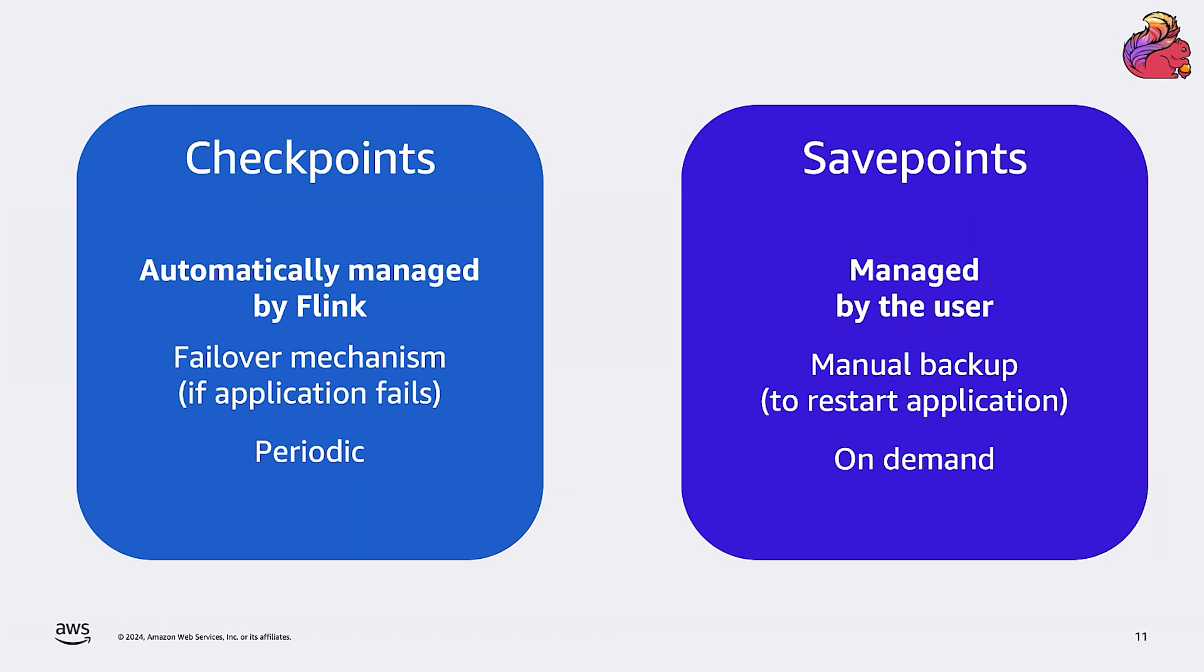Savepoints are a backup mechanism that Flink can use to restart the application from an older known position and state. Or simply, you can use this to save the state when you're stopping the application and then restore it when you restart the application later, so you can restart exactly from the point where you stopped. Users often schedule periodic savepoints every hour, every day, or whatever, similarly to what they do with periodic database backups. And this is useful because you will be able to restore from an old point in time in case something goes wrong. Another difference between savepoints and checkpoints is that savepoints are optimized for portability. So you can restore a savepoint that was taken with the previous Flink version to a newer Flink version. Conversely, checkpoints are optimized for speed and are not necessarily compatible across different runtimes.